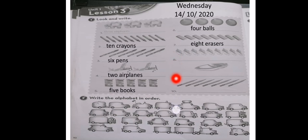Okay, number eight and number nine and number ten. Homework. Write on your book and send me to private. Number two. Write the alphabet in order. From A to Z. And send me on private. Thank you.